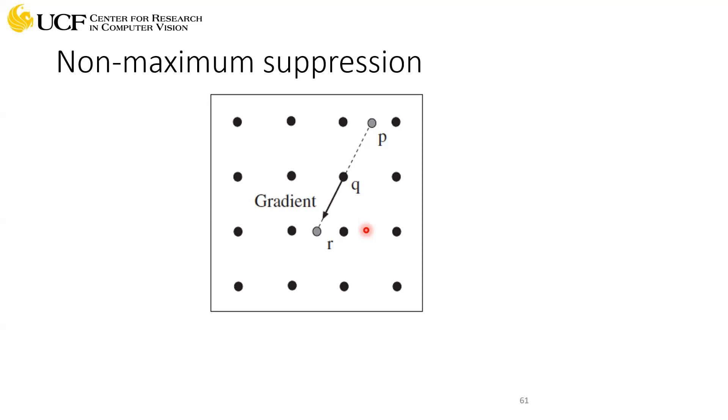Now there is a catch: when you look into the neighborhood, you only look into the orientation of the edge. So if your edge has this orientation, you will only look in this direction. For example, let's say we are interested in this pixel location q. What we will do is draw this direction and try to find the magnitude of the edge at the neighboring values. We'll compare this value with these values, and if the magnitude at this location is higher than r and p, we will say q is an edge.